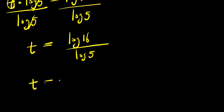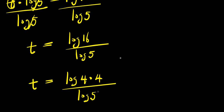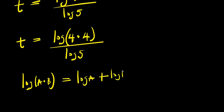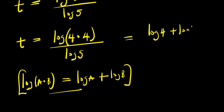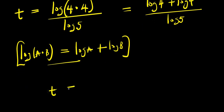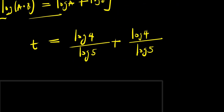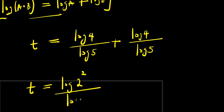From here we have t equals log 16, which is log of 4 times 4, divided by log 5. You can expand this using the rule: if you have log of a times b, this equals log a plus log b. So log 16, which is log of 2 squared times 2 squared, equals 2 log 2 plus 2 log 2, all divided by log 5.